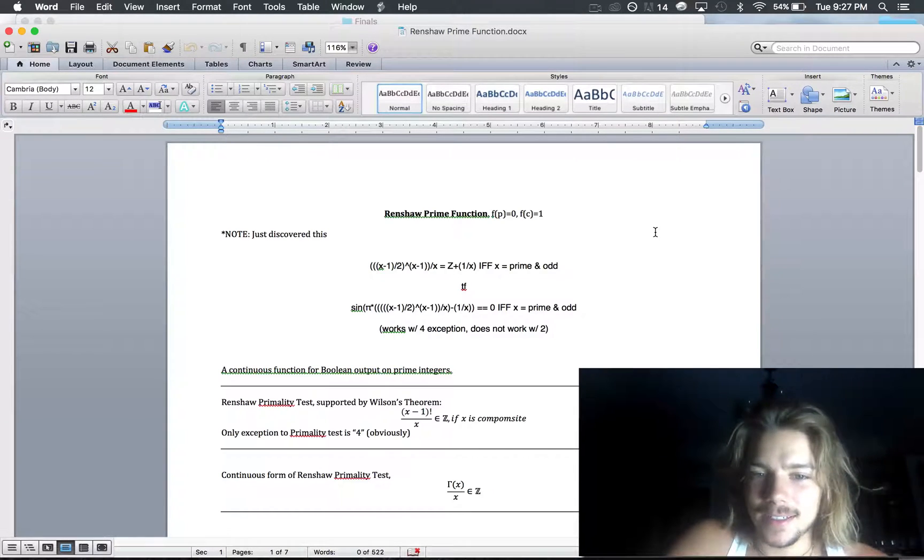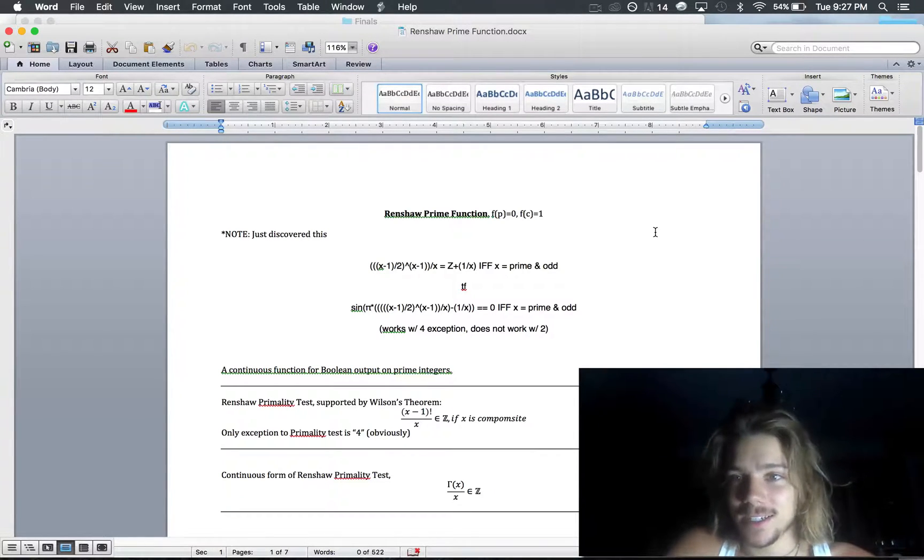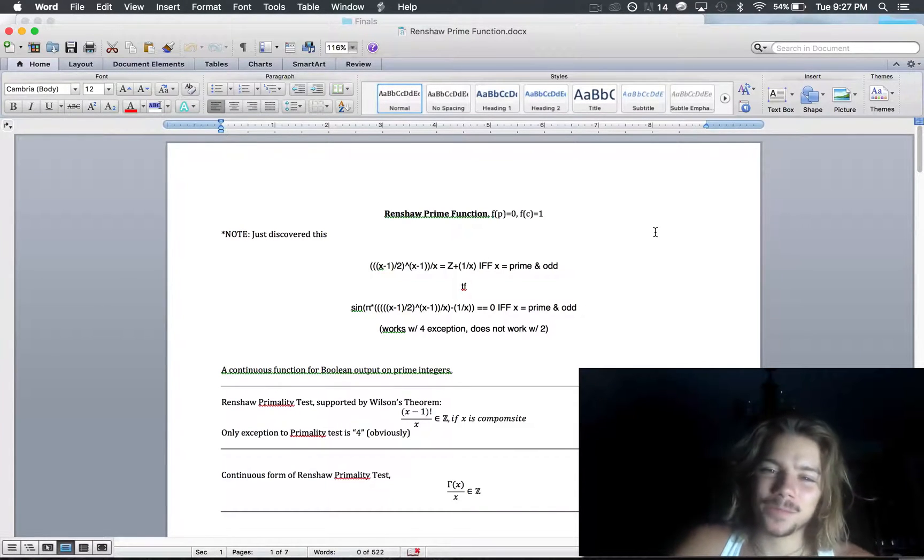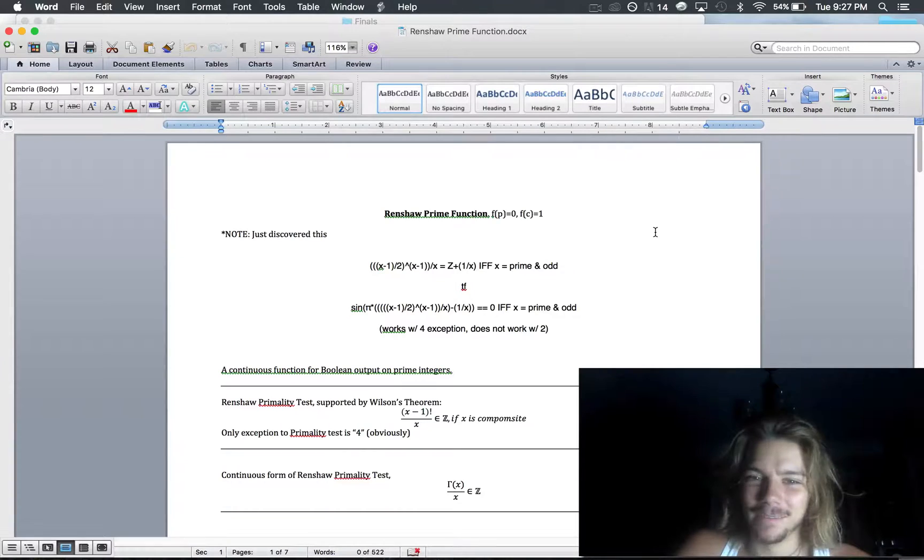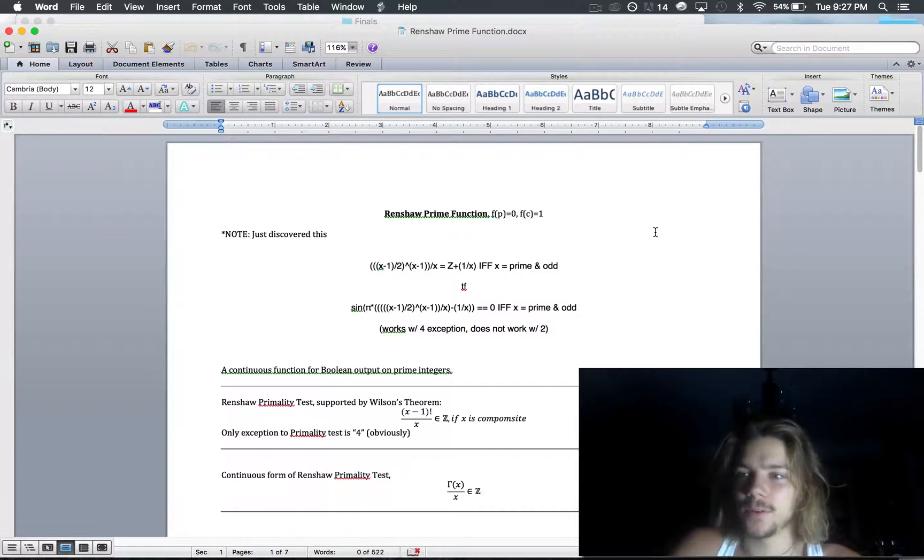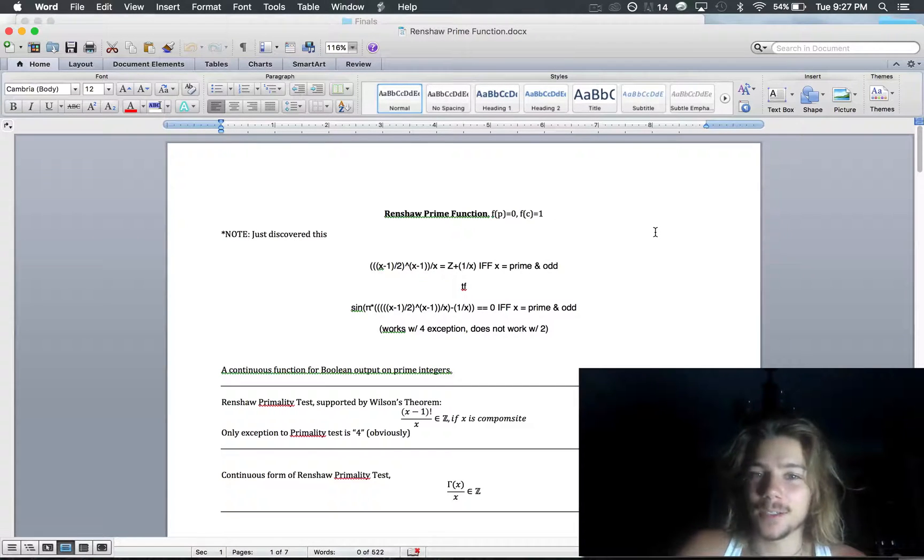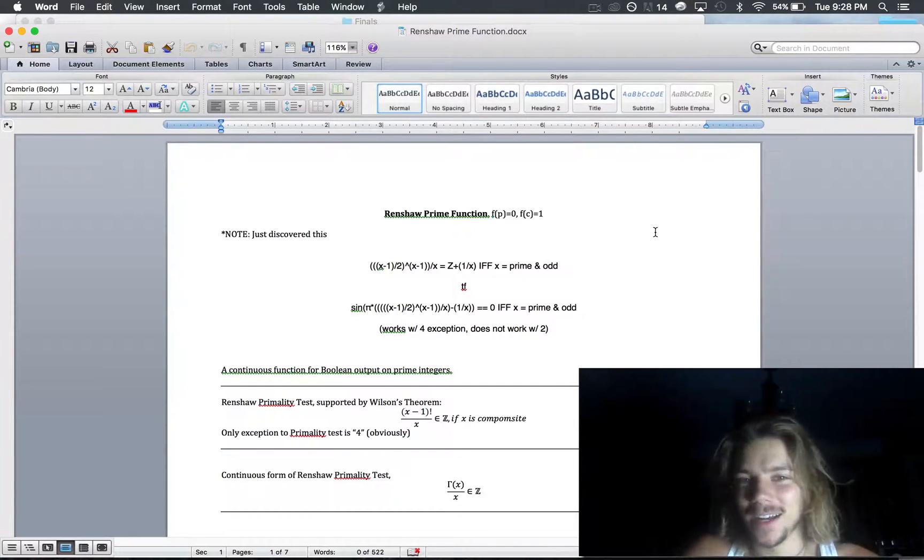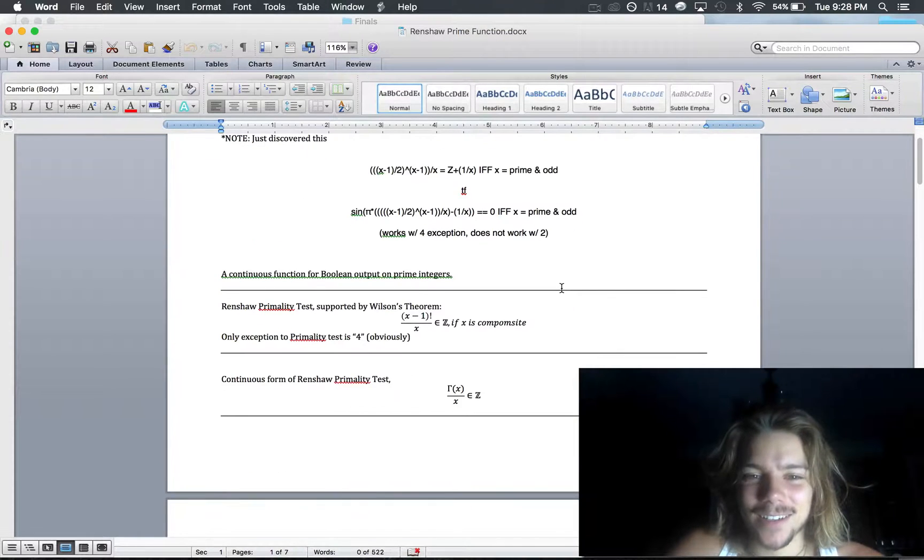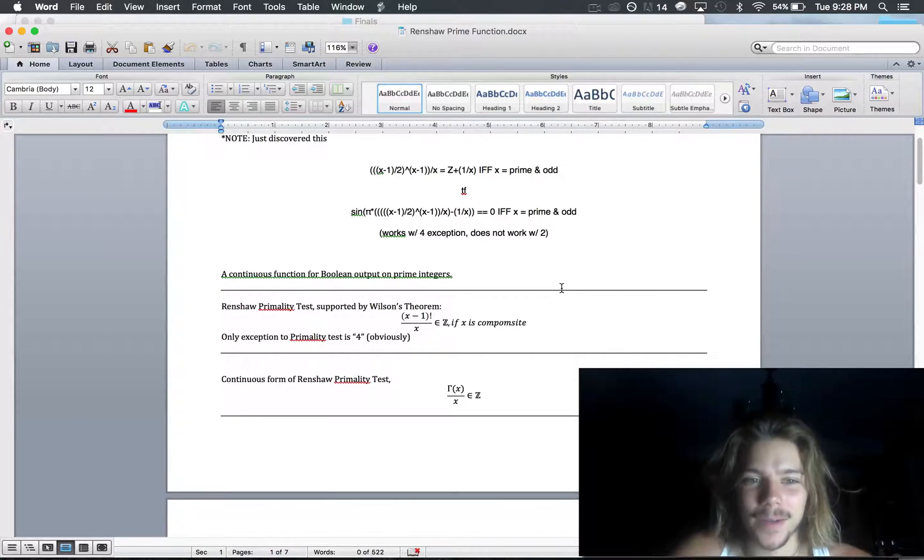And I actually did end up coming up with a function that allowed me to test the primality of a number using factorial, which I denote as gamma function instead. And I didn't have a proof for why it worked at first. I was actually able to create one, but later on, after a lot of research, I found some online proofs involving Wilson's theorem for the same principle I was working with.